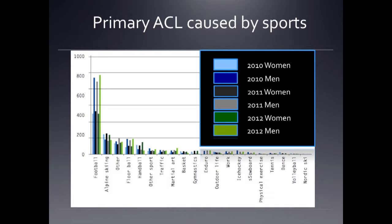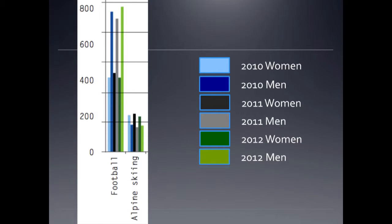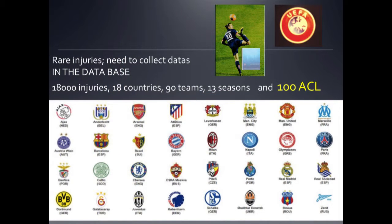Looking at the ACL registry in Sweden, football is the most frequent cause for ACL rupture, and the second is Alpine skiing. There are more ACL ruptures operated on in males since 2010 than in females, with a roughly stable ratio. Because this lesion is not so frequent, we need registries to record and analyze it. Under the direction of Jan Engstrom at UEFA, among 18,000 injuries, only 100 were ACL ruptures — so it's not frequent, but it is very severe.